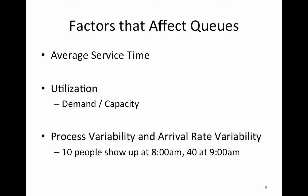Factors that affect queues include average service time, utilization — which considers both demand and capacity — and process variability, including arrival rate variability. If a process step on average takes one minute, but sometimes takes 10 minutes and other times 10 seconds, that variability can be problematic. Process variability is the enemy of queues. If you don't want queues, have low process variability and consistent arrival rates.